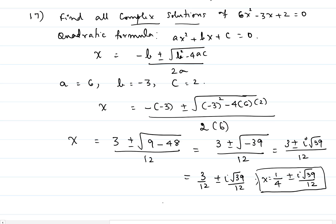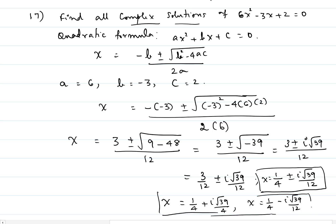If you write them out as two separate roots, that would be x equals 1/4 plus i square root of 39 over 4, and x equals 1/4 minus i square root of 39 over 12. Those would be the two roots of the equation. Hope this video helps.